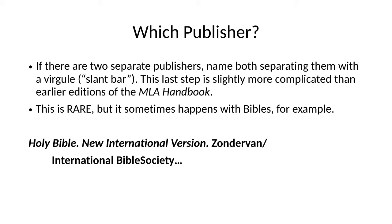Occasionally there are two separate publishers. This is unusual, but does happen with special editions — sometimes with religious works. So in that case, as with this New International Version of the Bible, you name both publishers and separate them with the virgule, or what is sometimes called the slant bar or forward slash. The virgule is the term grammarians use.